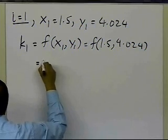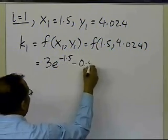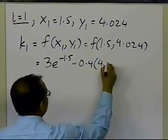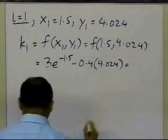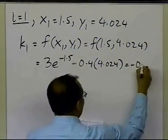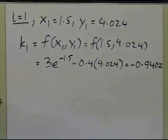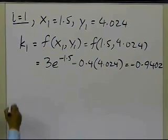And that's the same as 3 e to the power minus the value of x minus 0.4 times the value of y, and that turns out to be equal to minus 0.9402. So that is the value of k1, the slope at x1.